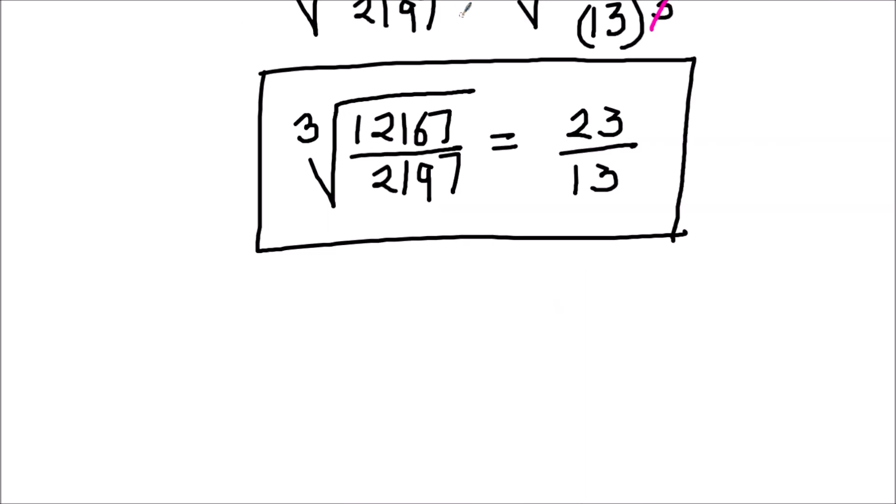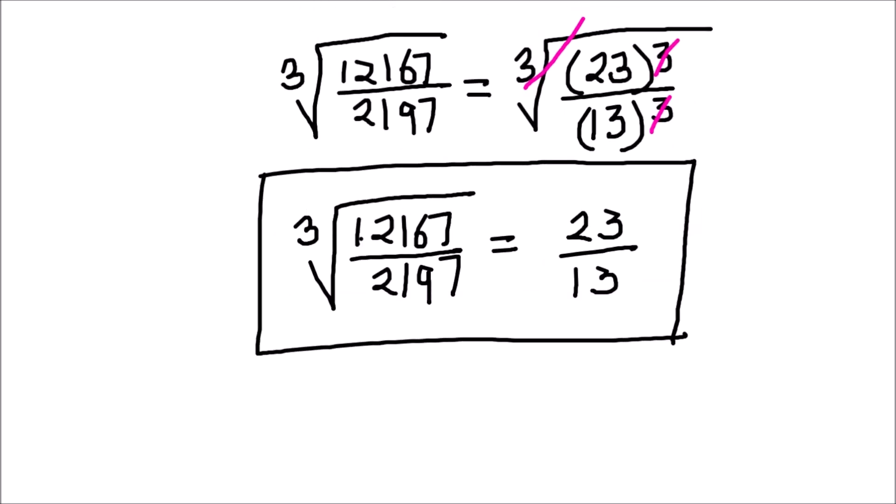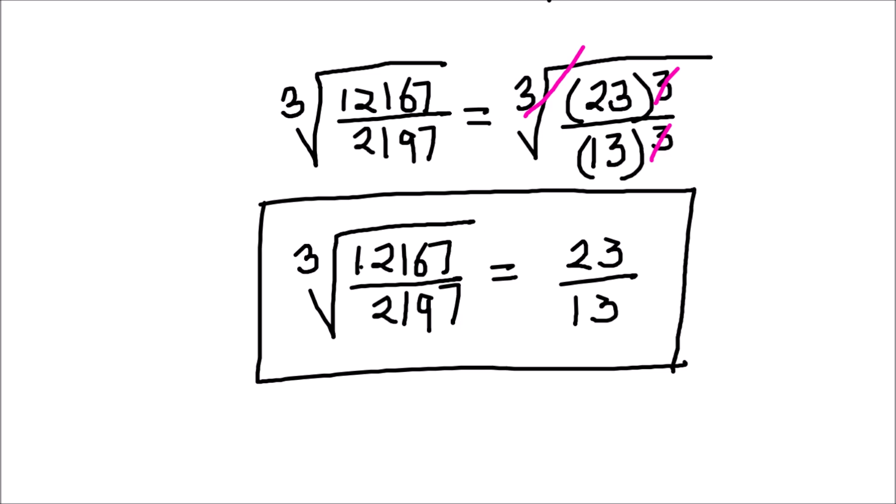So the cube root of this fraction is 23 upon 13. This is how we find the cube root of any fraction — we first find the cube root of the numerator and denominator separately and then find the cube root of the whole fraction. I hope this video is helpful to you. If you like the video, please hit the like button and subscribe to my channel for more math videos. Thanks for watching.